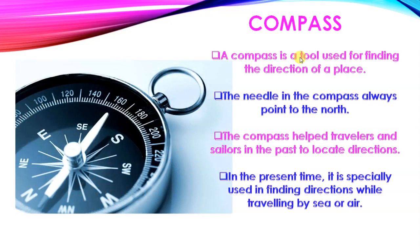Now compass. A compass is a tool used for finding the direction of a place. The needle in the compass always points to the north. We use compass to find a direction. The needle always points to the north direction. If we find north direction or another direction, we can find easily. The compass helped travelers and sailors in the past to locate directions. It helps travelers who are going through the sea route. They also use the compass to find the direction. In the present time, it is specially used in finding directions while traveling by sea or air also.